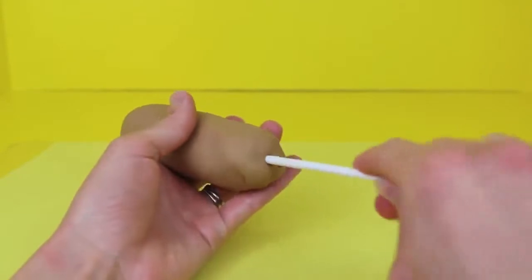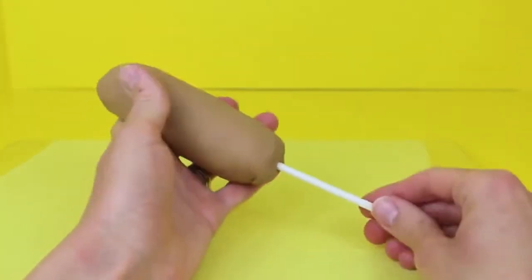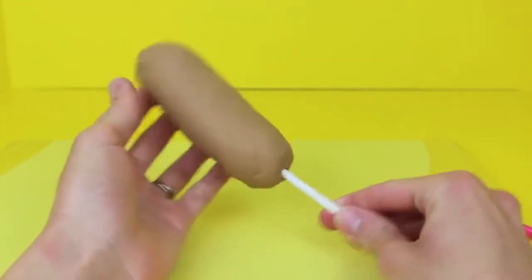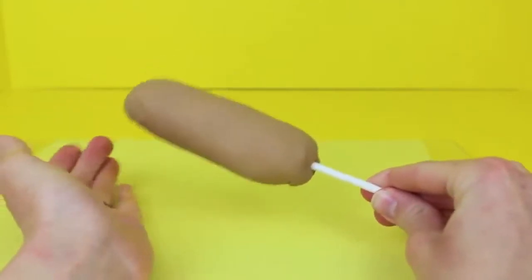To make it more of a true hot dog I'm going to now insert the stick. There we go it's nice and strong and it helps hold the corn dog together too.